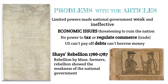Coming out of the American Revolution and its relationship with England, the new United States wanted to make sure that the central or federal government was weak, and therefore ineffective. They didn't purposely want to make it ineffective, but they did purposely want to make it weak. They didn't want to revisit a relationship with their government like they experienced with England, feeling that the government was too oppressive. Most of the initial problems under the Articles of Confederation were economic problems, so economic issues were threatening to ruin the nation.